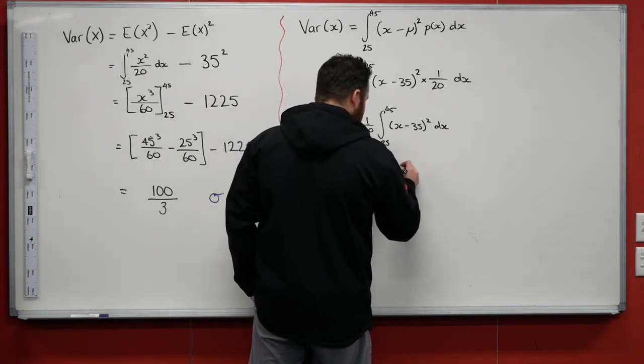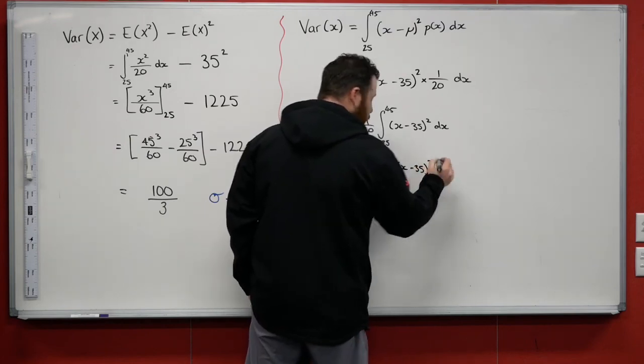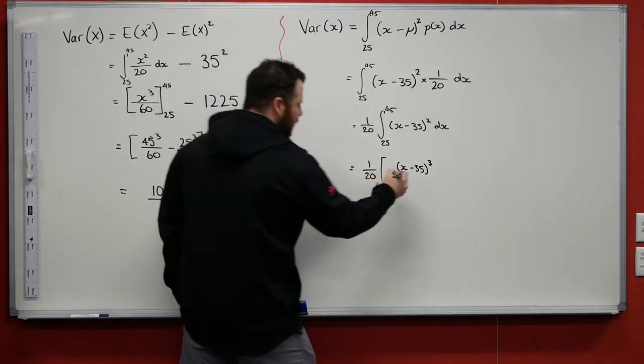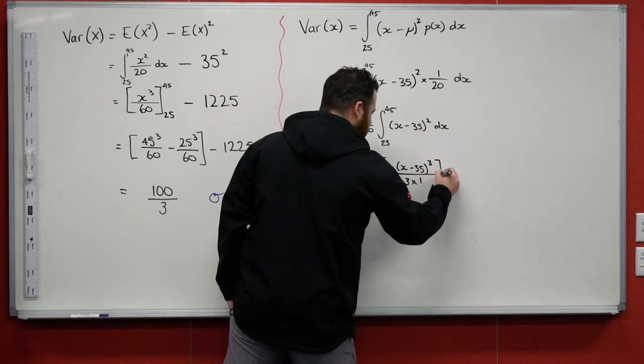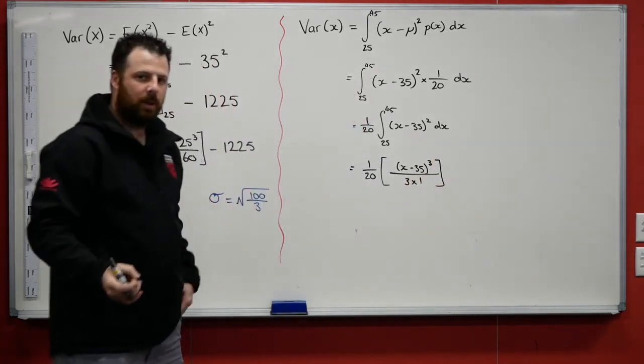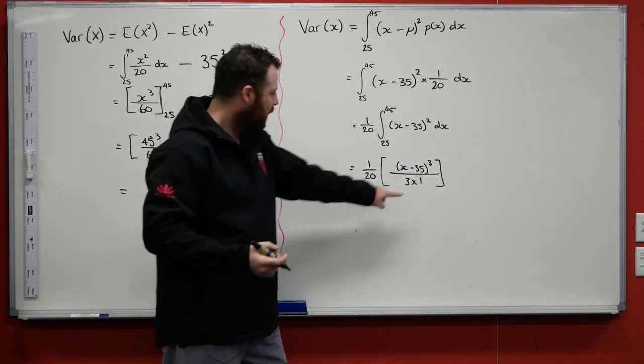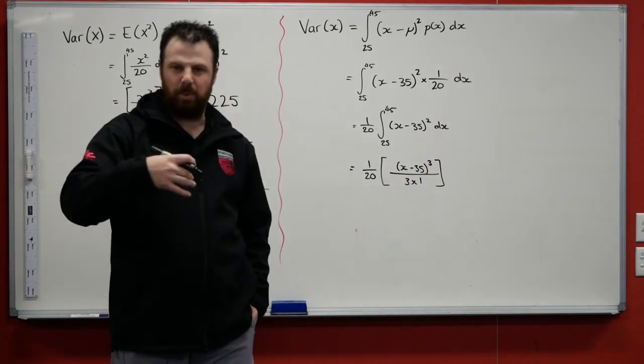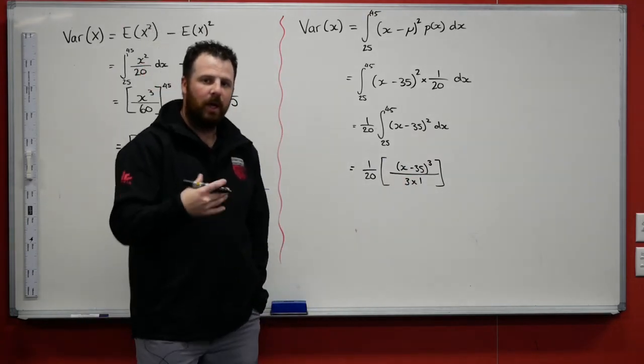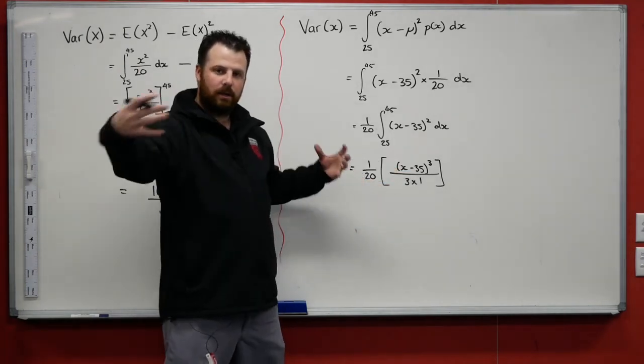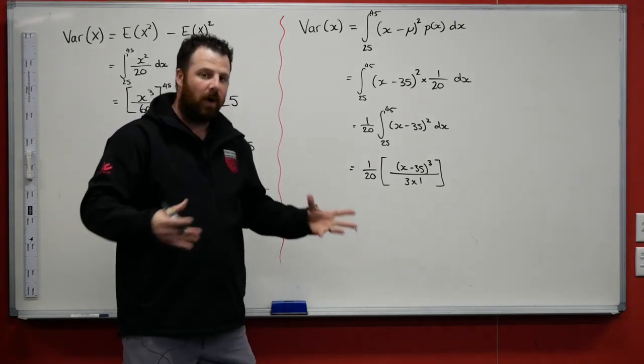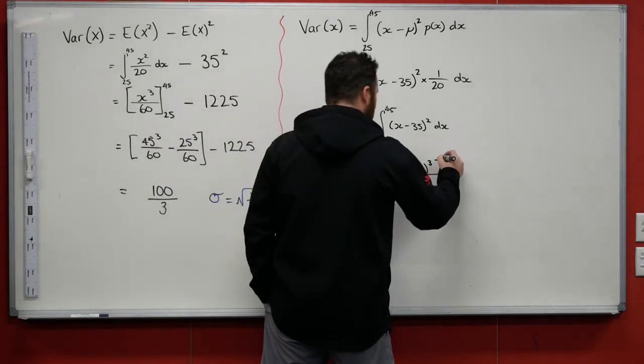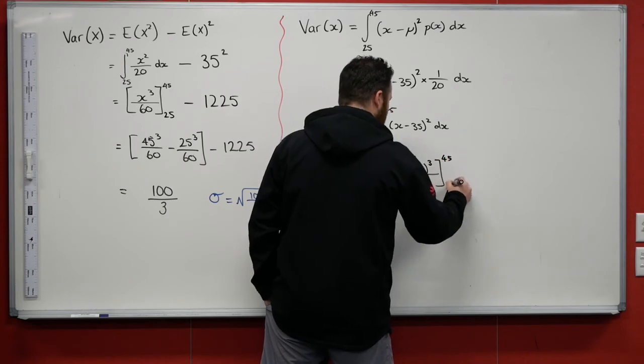So that is going to equal to 1/20, evaluated the (x minus 35) cubed, add 1 to the power, divide by 3 times 1. Remember, it's 3 times 1, it's divided by 3 because of our new power, and also divide by 1 because that's what the derivative of the inside. Remember, with chain rule, it's the derivative of the inside times the outside. So if I'm multiplying by the inside, when I'm integrating, I've got to remember to divide by the inside between 45 and 25.